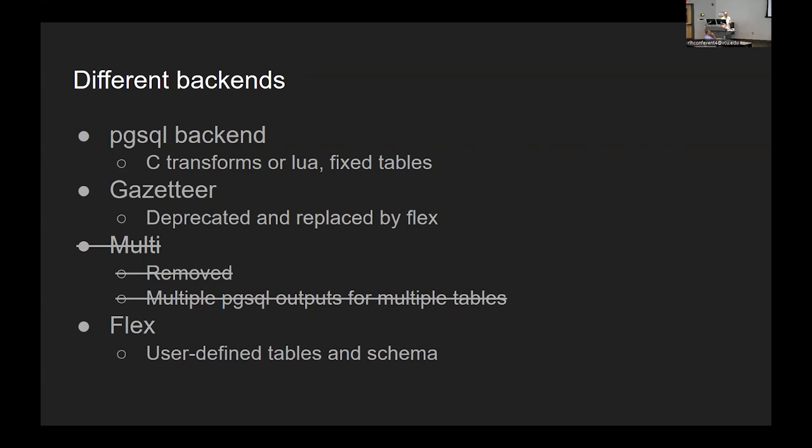There's the gazetteer output, which has been deprecated. It's used by Nominatim. It's still in the code but will be removed at some point. There's a multi-backend which was done about 2014 as a way to get multiple tables, but the way it was architected was really relying on the API for the pgsql backend, so it wasn't the easiest to use. It's been removed because we now have the flex backend, which allows the user to define what tables and the schema that they're outputting to.